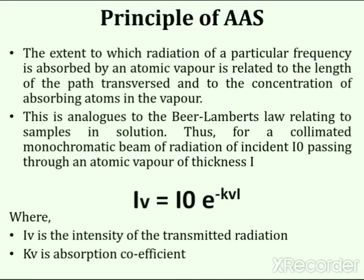According to the principle of Atomic Absorption Spectroscopy, the extent to which radiation of a particular frequency is absorbed by an atomic vapor is related to the length of the path traversed and to the concentration of absorbing atoms in the vapor. The path traversed refers to the extended or changed path of atoms across something, which happens because of absorption of radiation.